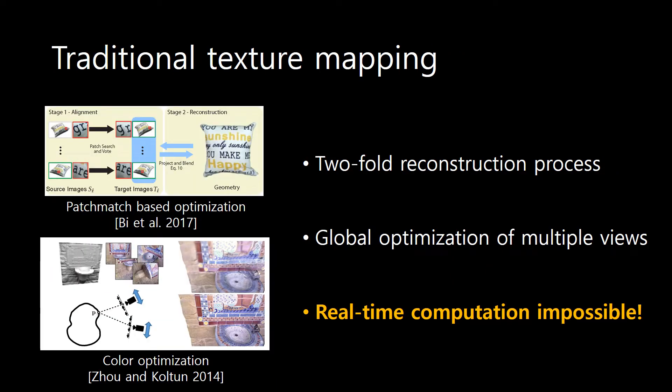Traditional texture mapping takes a two-fold reconstruction process — geometry and texture reconstruction — and requires several minutes of computation for optimizing correspondences. Thus, it is not feasible for real-time application.